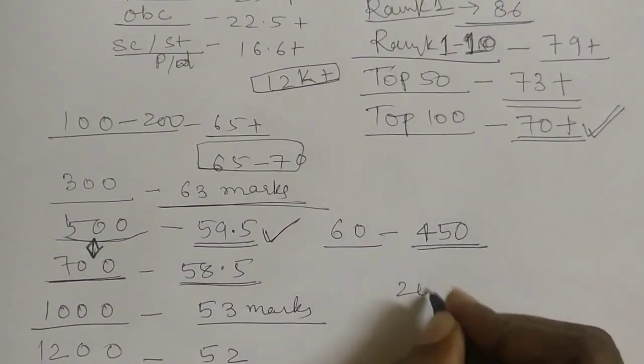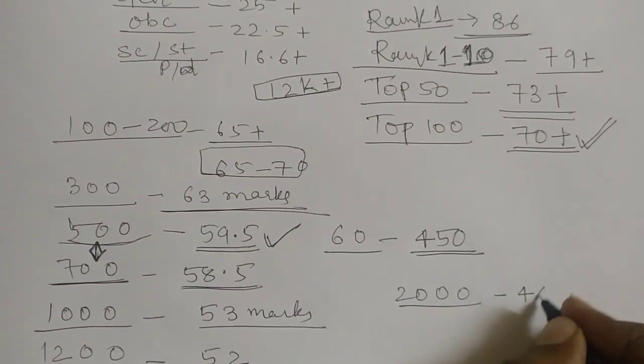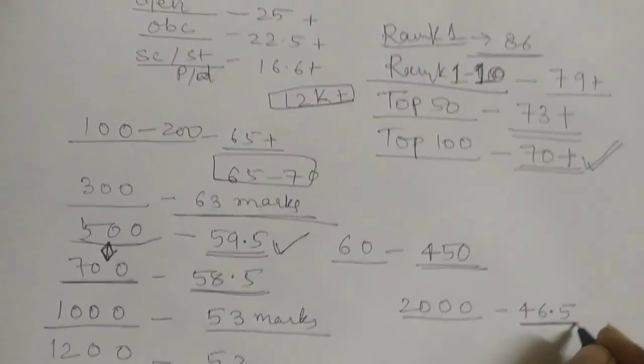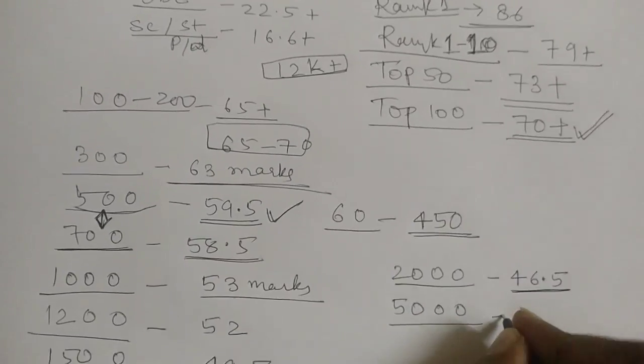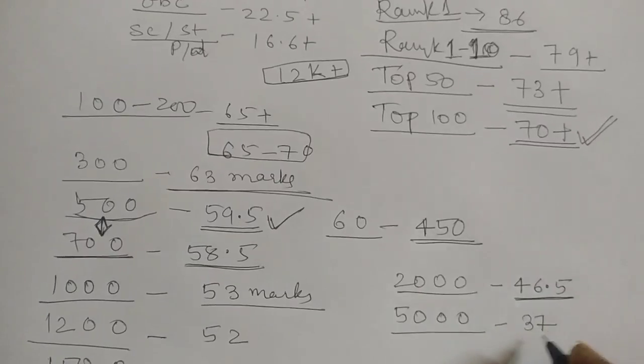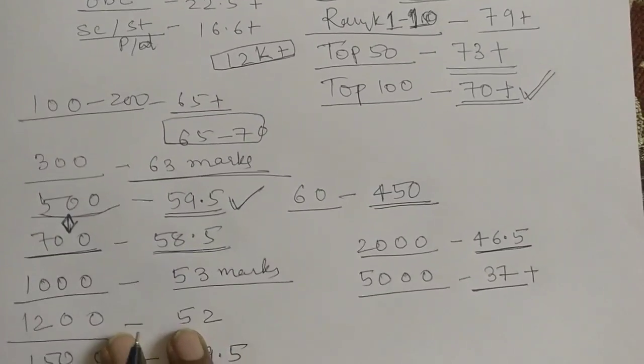Similarly, if we see for 2000 rank, this year, to get a rank inside 2000, you need to get 46.5 marks. To get a rank inside 5000, the marks needed was 37.5. So, if you are 37 plus, your rank would be 5000.